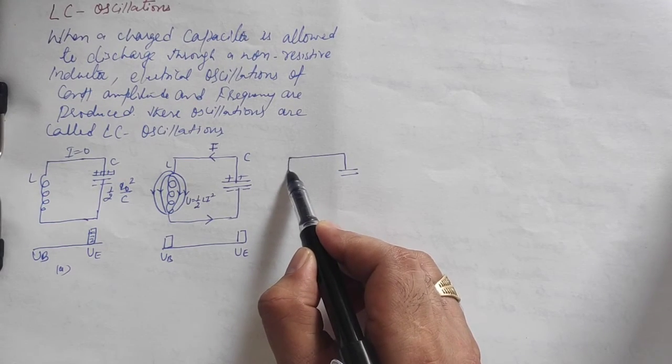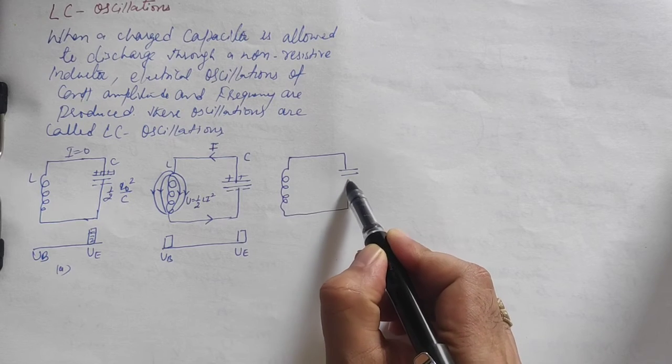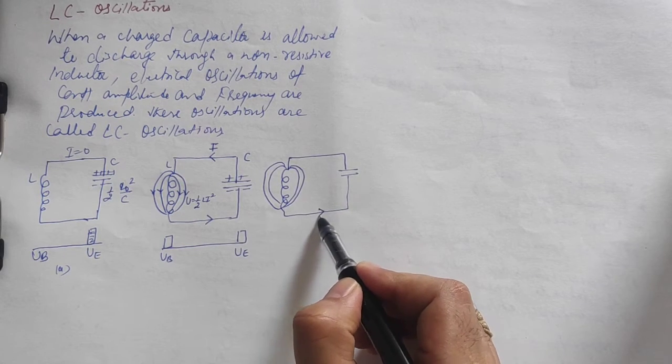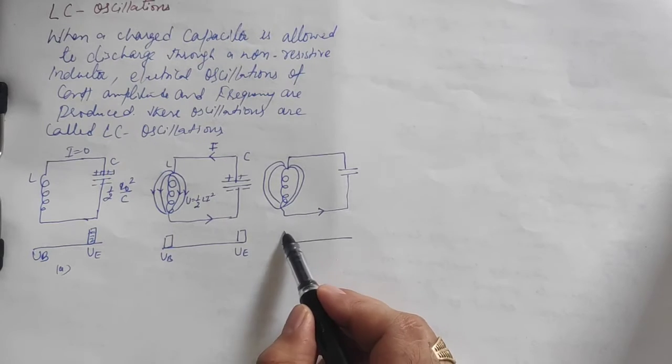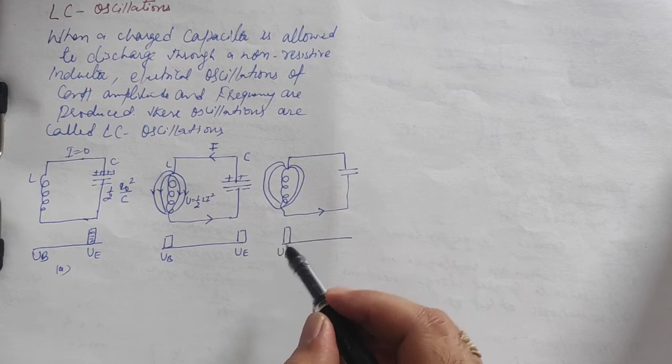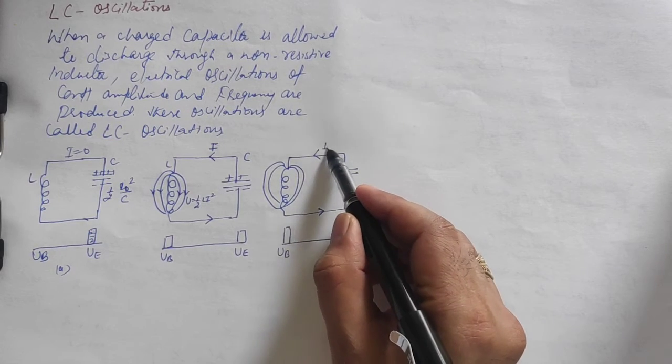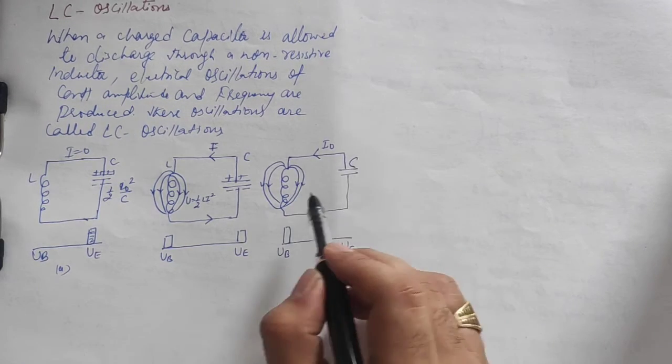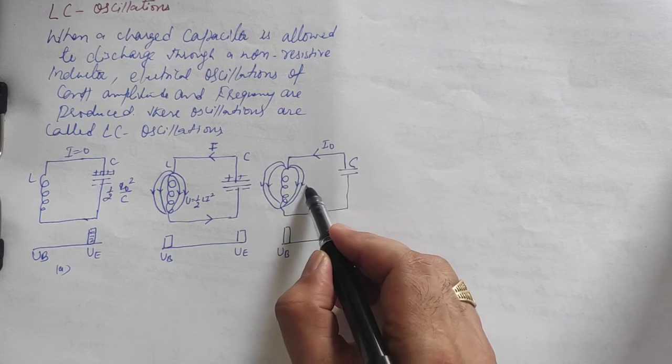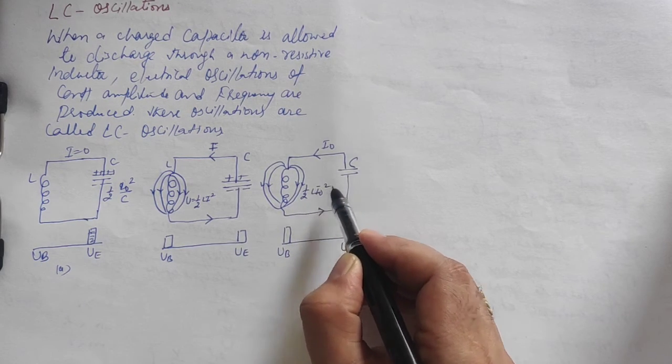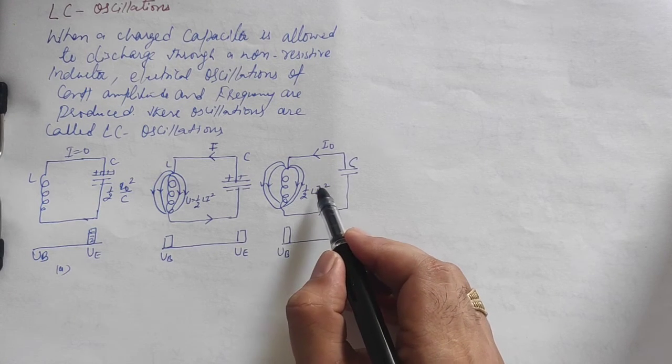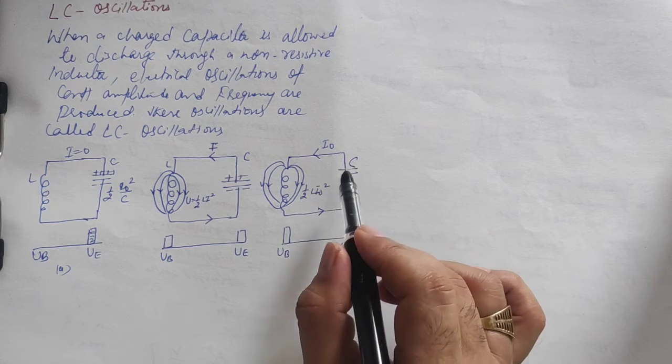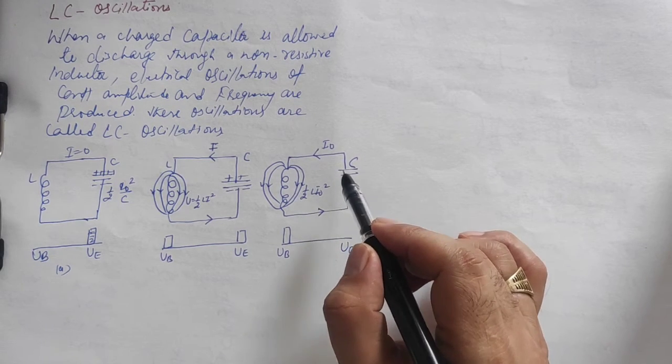The capacitor is connected to the inductor. When current reaches maximum I₀, all energy is transferred and stored in the form of magnetic energy, equal to half LI₀². Maximum current flows, so maximum energy is stored. The electric energy has completely converted to magnetic energy.